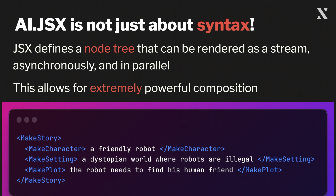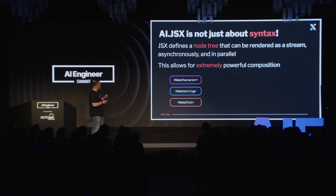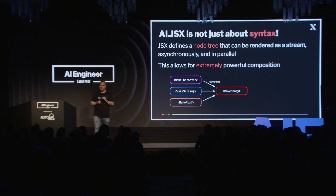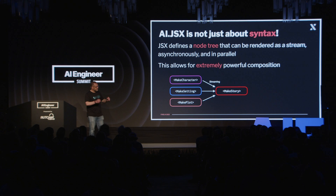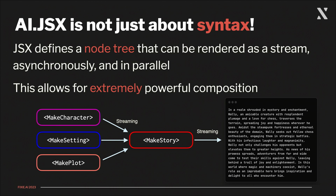Here's a simple example of writing a story where I have a makeStory component with three child components: one defining the character, another defining the setting, and a third defining the plot. When we render this application, all three of those components run in parallel — they're all streaming in parallel, with three concurrent LLM calls going on. They're streaming their tokens back to the makeStory component in real time, which is then streaming its output to the render result, producing a story like this.